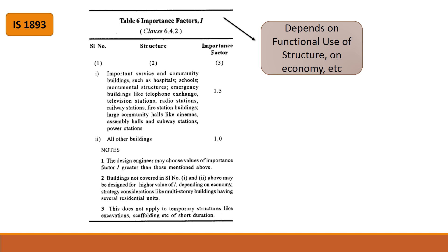For all other buildings, I is taken as 1.0. The note here is that the design engineer may choose values of the importance factor greater than those mentioned. Buildings not covered in the above categories may be designed for a higher value of I depending on economy and strategy considerations, such as multi-story buildings having several residential units. This does not apply to temporary structures like excavations or scaffolding of short duration.